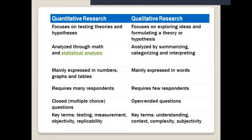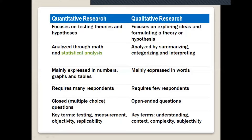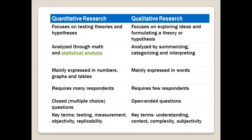Quantitative research requires many respondents, while qualitative has fewer respondents because the scope is wider. Quantitative research uses closed, multiple-choice questions while qualitative uses open-ended questions. The keywords for quantitative are: testing, measurement, objective, and replicability. For qualitative we have: understanding, context, complexity, and subjectivity.